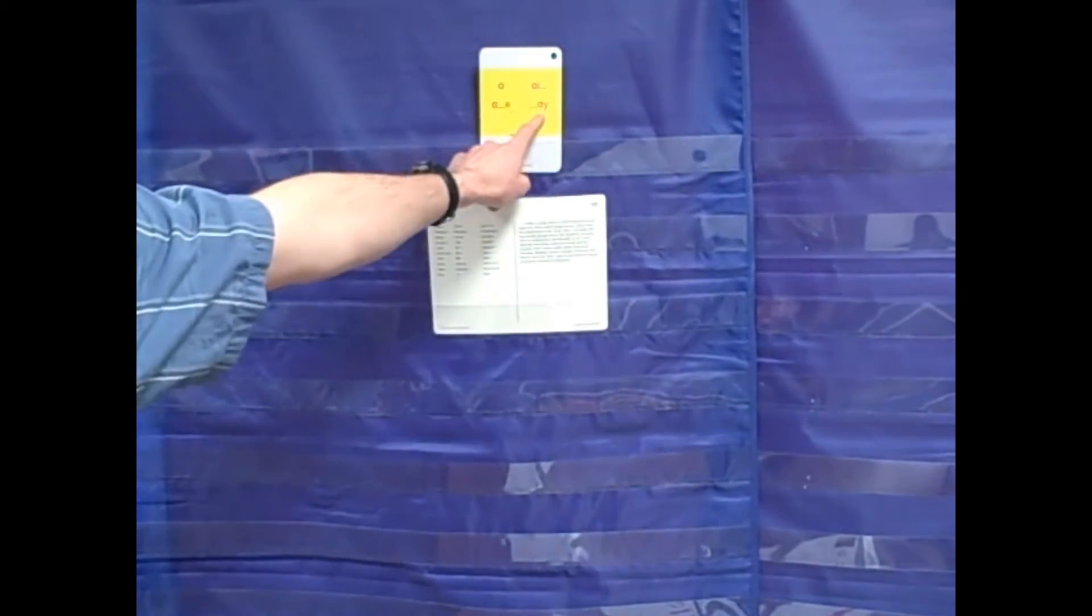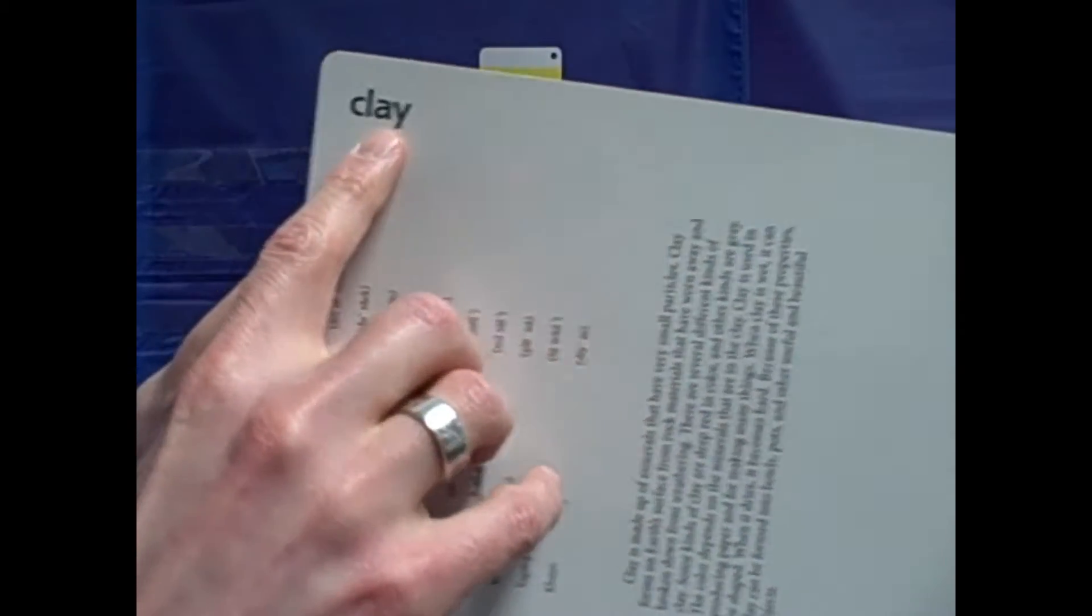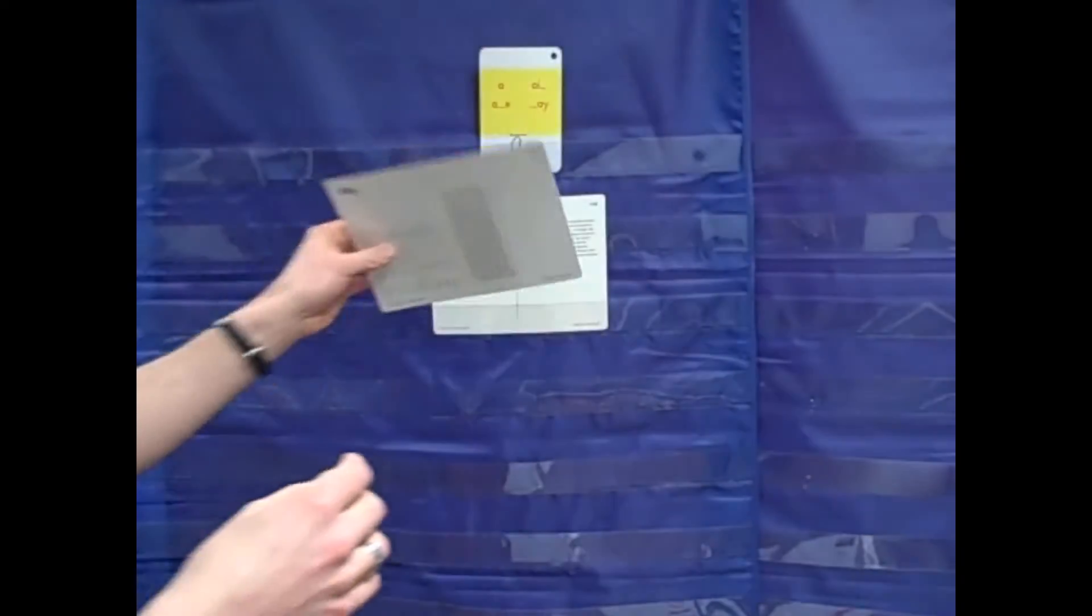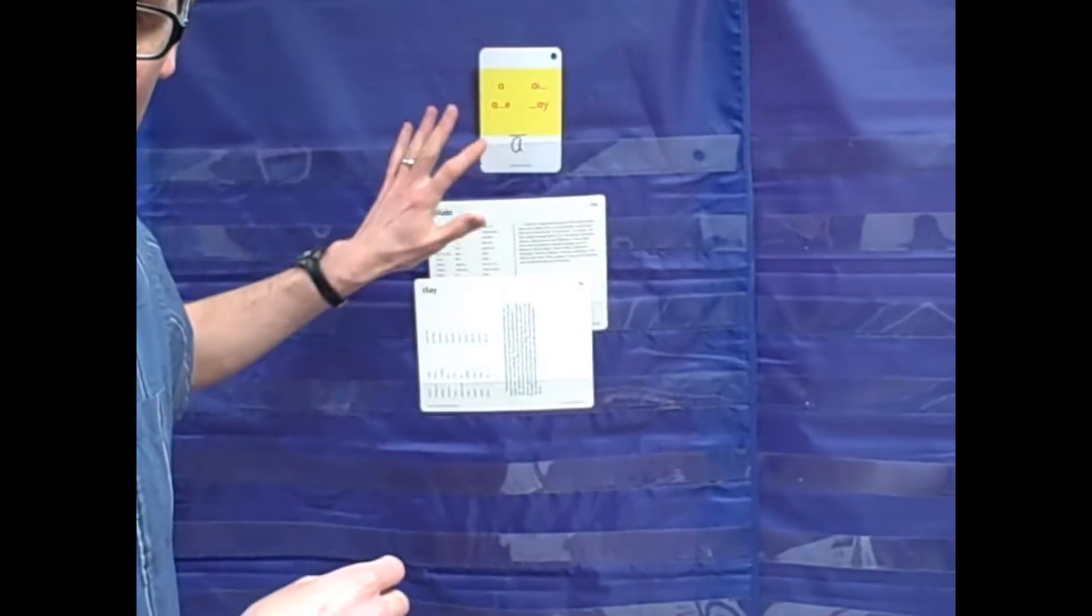For the spelling AY, I have this picture. It's a picture of clay. I show the child the picture, I show them the spelling, and then I can put the picture with the other long A words.